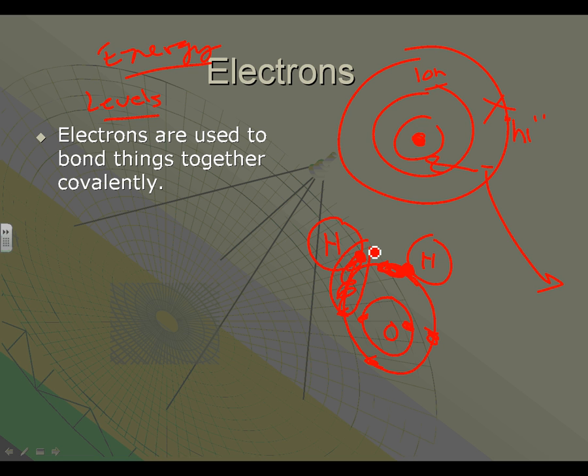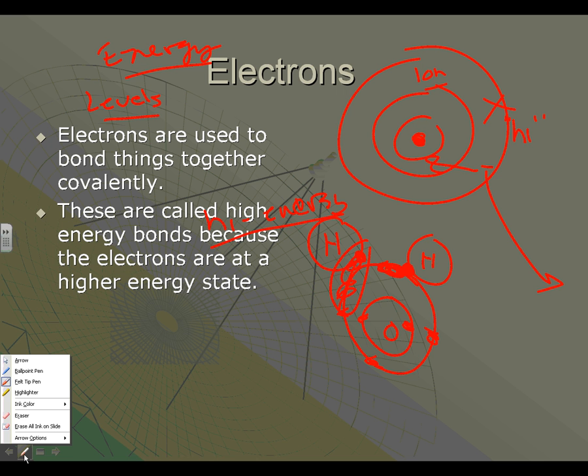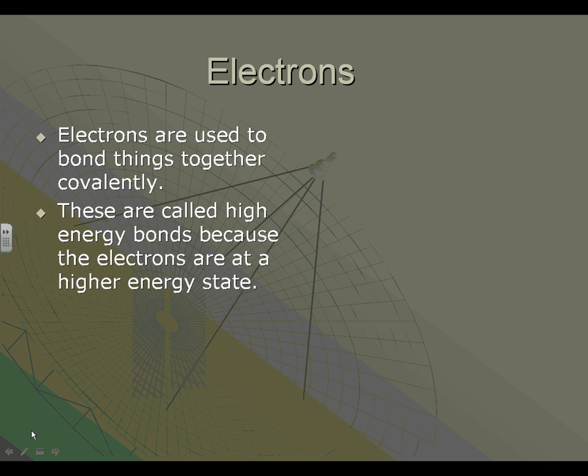Those electrons, that sharing, is a high energy bond. Well, in some cases it is. They're called high energy bonds because the electrons are at a higher energy state. That's why they're high energy bonds. Because the electrons are at a higher energy state, they have to be to hold that thing together.